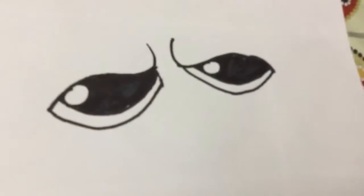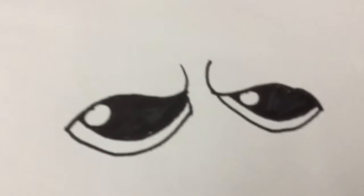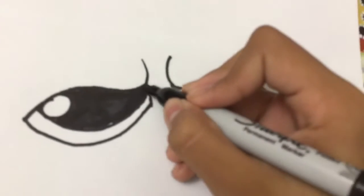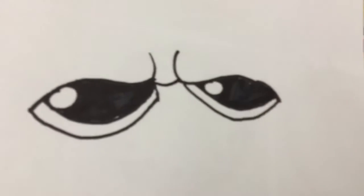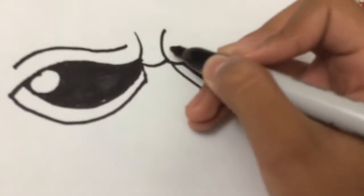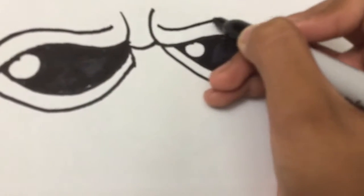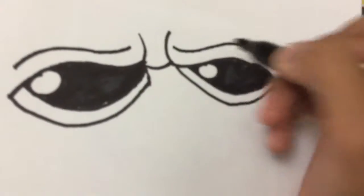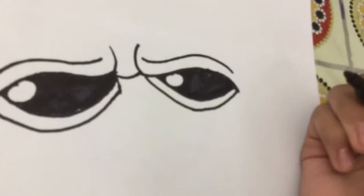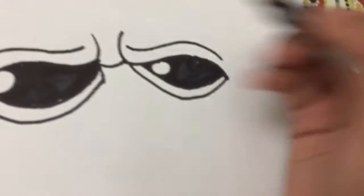Okay, so this is the Boss Baby's eyes. Let's just connect this part in like this. And then I think he's like squinting, so we draw another line like this on top to mirror that line.